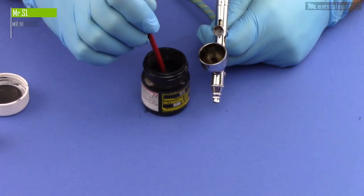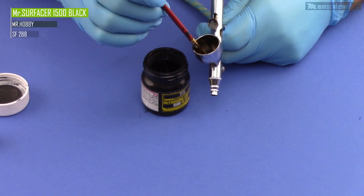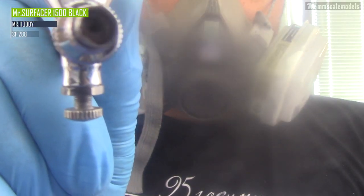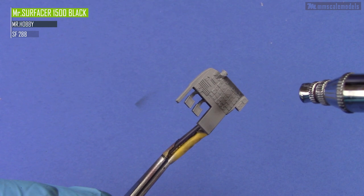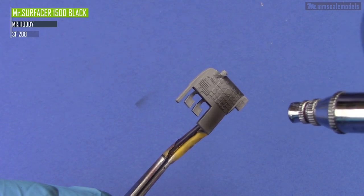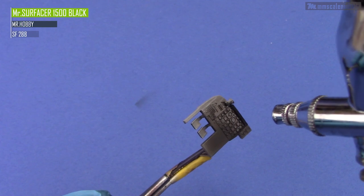Now let's apply a coat of Mr. Surfacer 1500 black. This will not only help us with the paint adhesion but will also be the main color on part of the dashboard.